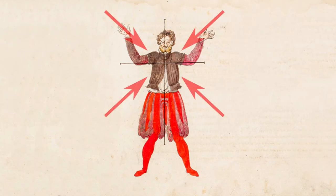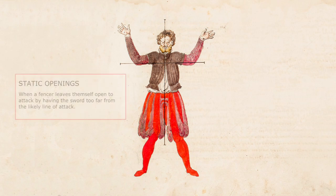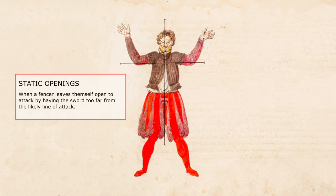The basic understanding of openings is that they're the four lines of attack. But a simple line of attack is not necessarily an opening in a tactical sense. Meyer describes a number of these kinds of tactical openings implicitly within his work, and I like to divide these into four distinct categories. The first category are static openings — this is simply where you've left the sword too far out of line and you can't get back to defend yourself in time.